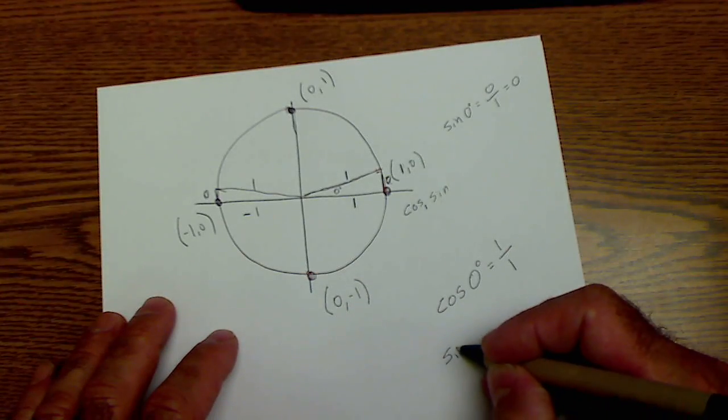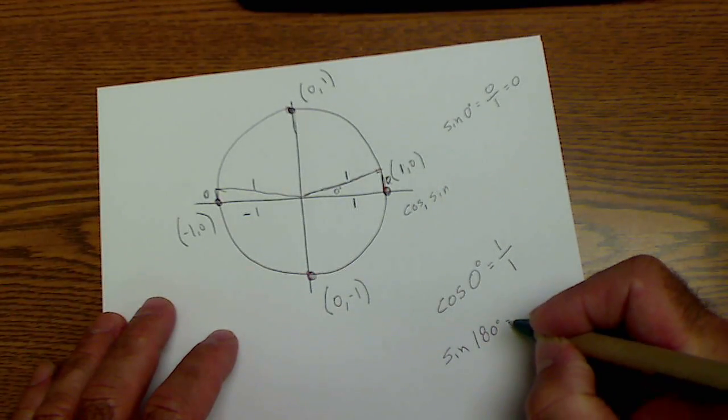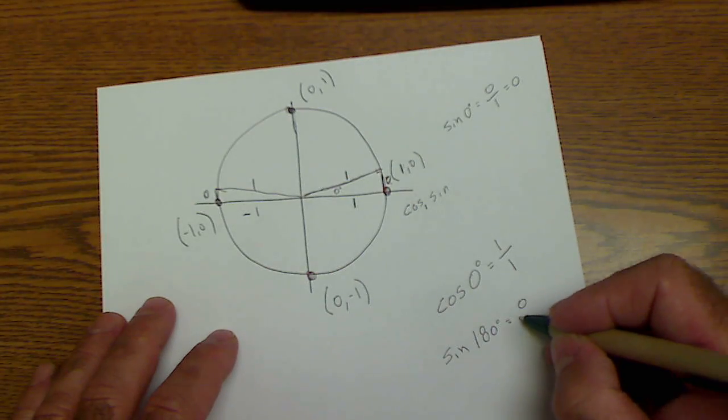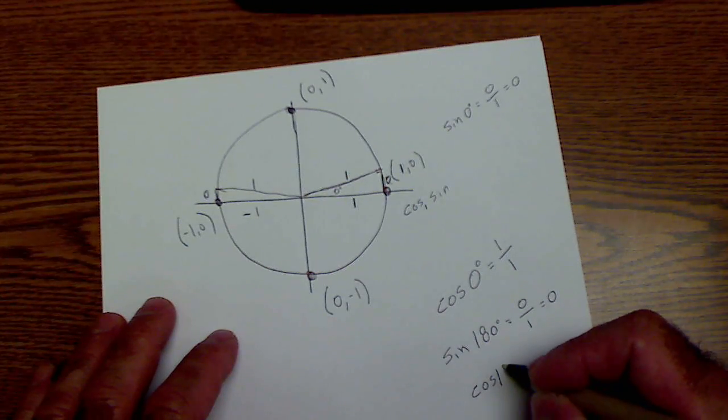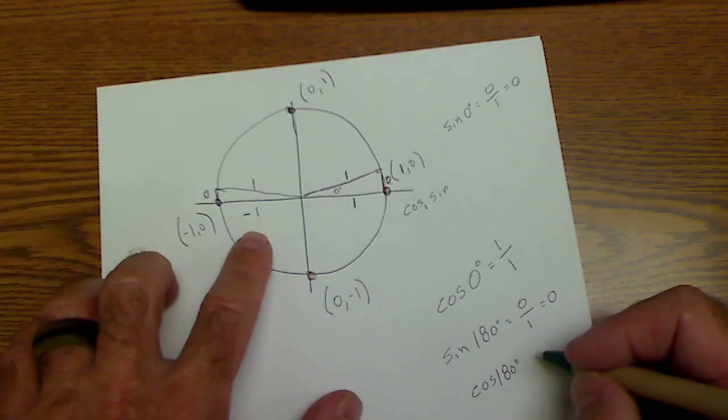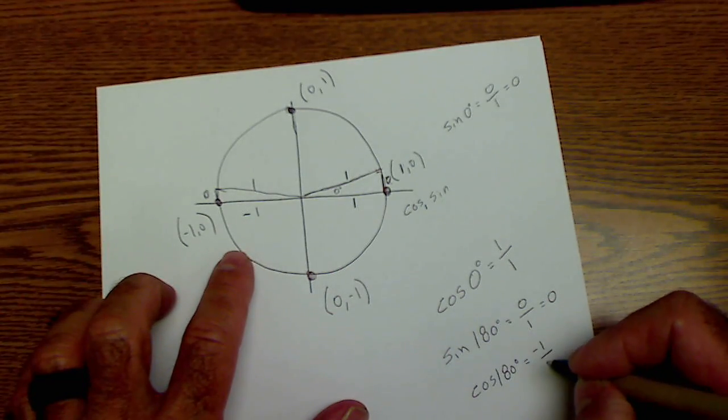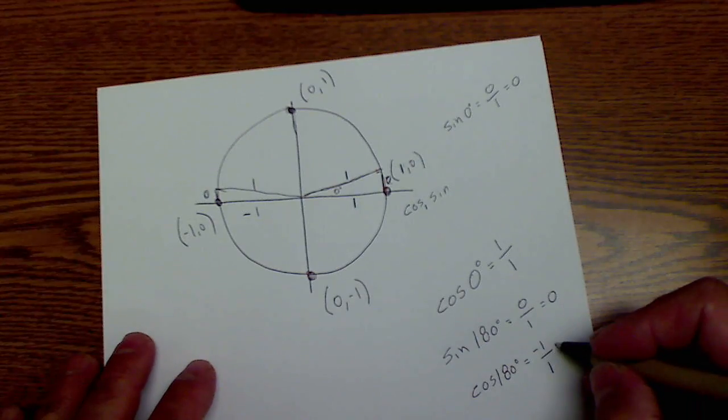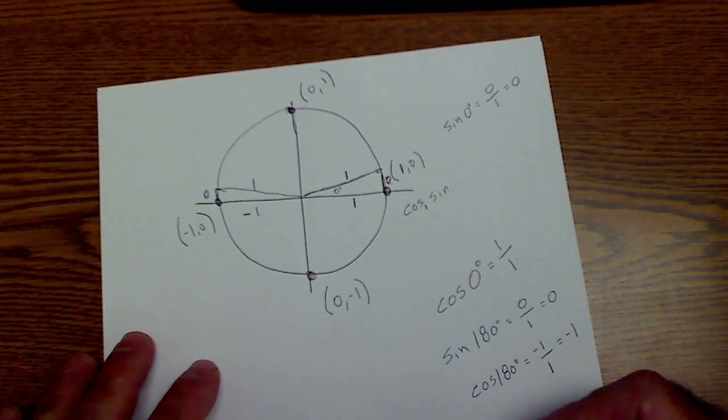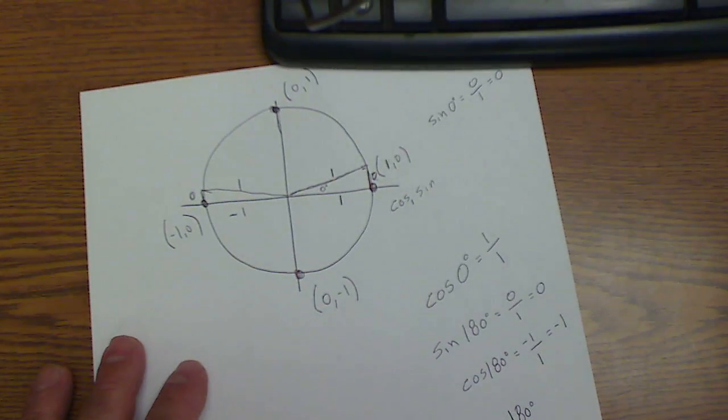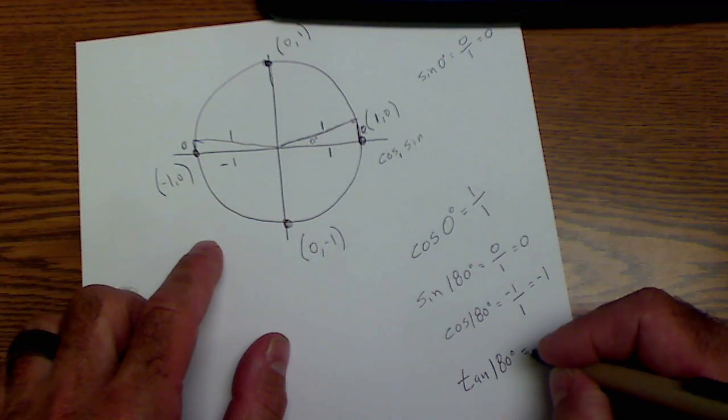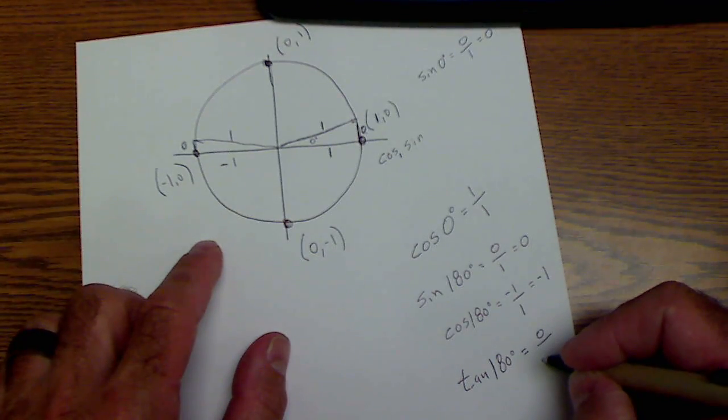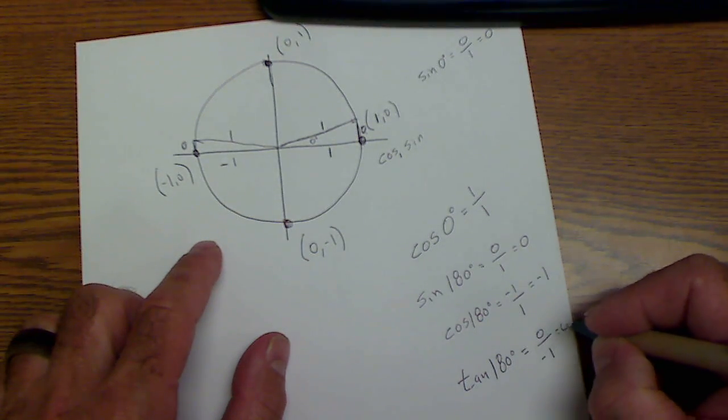So sine of 180 degrees would be equal to the opposite over the hypotenuse, or 0. Cosine of 180 degrees would be my adjacent negative 1 over my hypotenuse 1, or negative 1. So tangent of 180, tan of 180 is opposite over adjacent, 0 over negative 1, or 0.